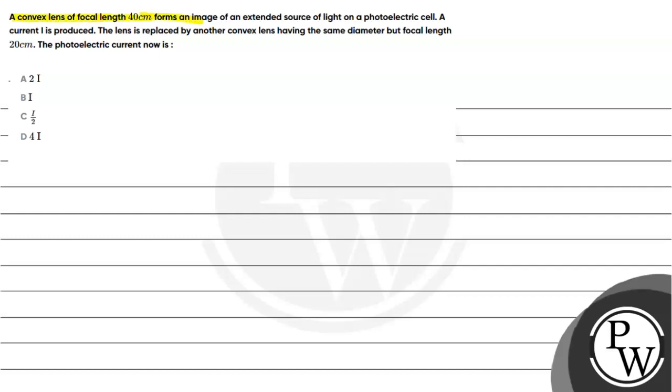A convex lens of focal length 40 cm forms an image of an extended source of light on a photoelectric cell. A current I is produced. The lens is replaced by another convex lens having the same diameter but focal length 20 cm.